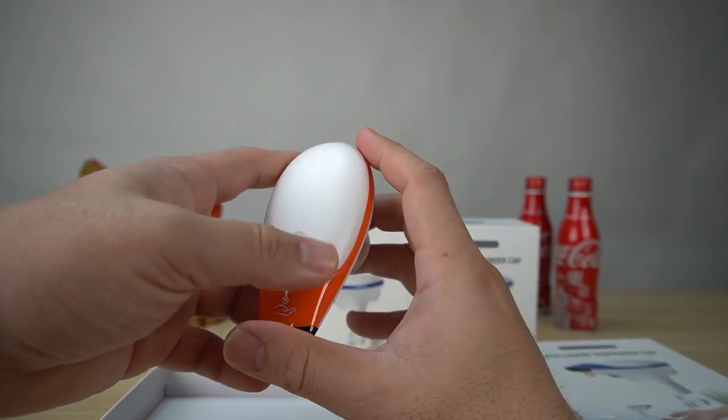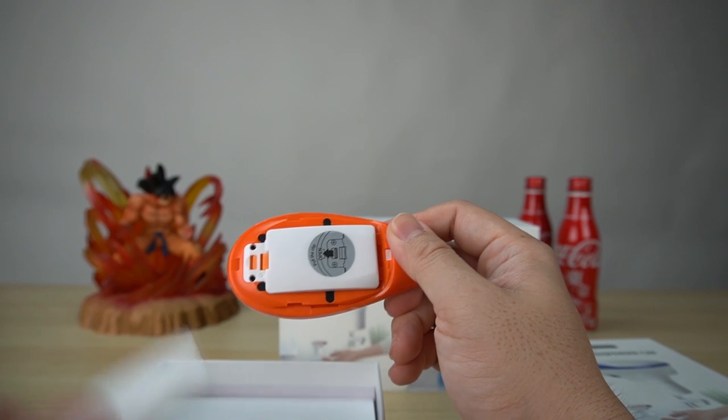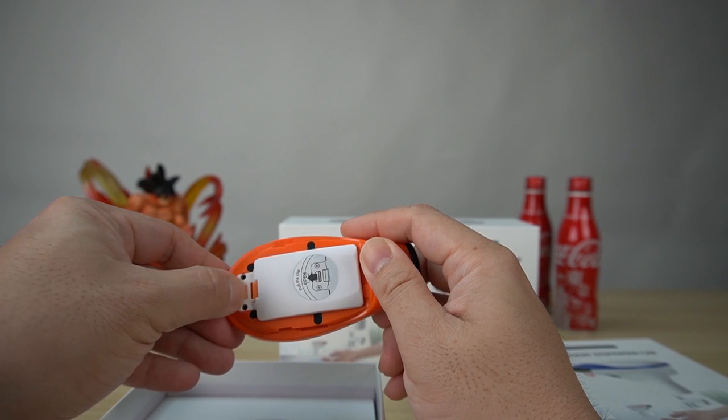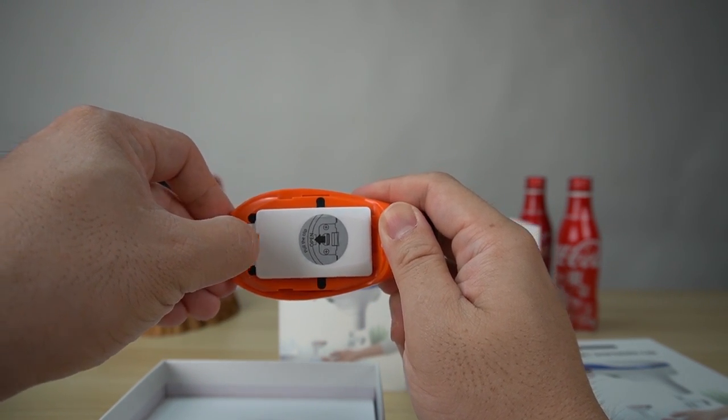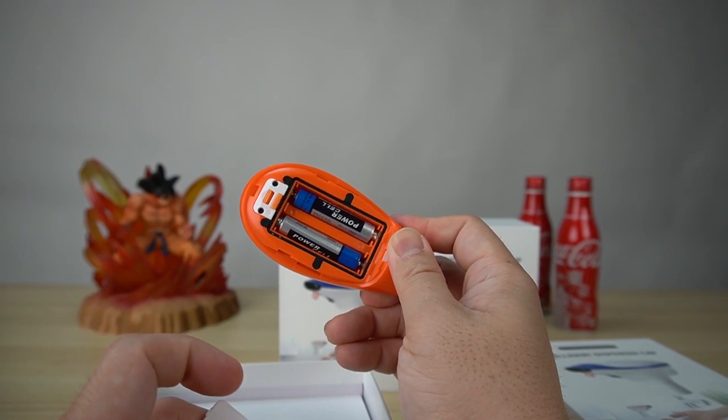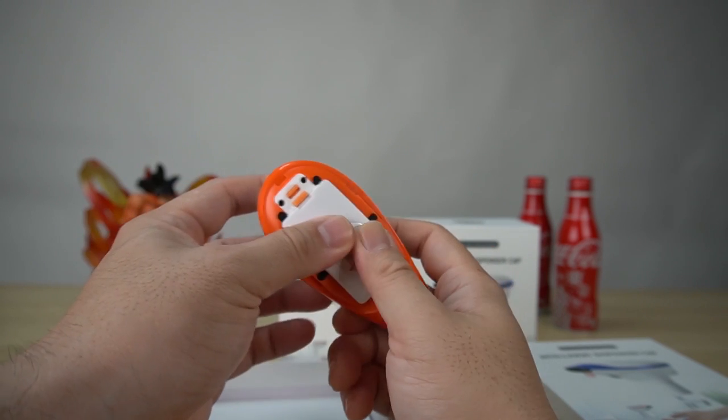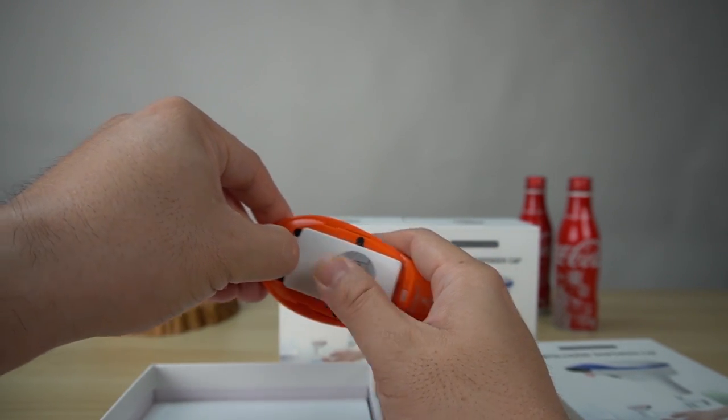We have our sprayer inside wherein we need to plug in two AA batteries. In order to eject this, all we need to do is just pick it and you have the battery inside. Put it back, just simply snap it. It's easy.